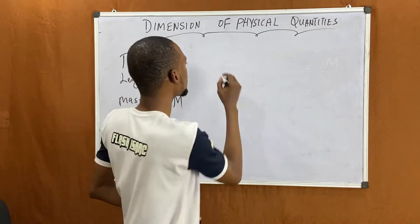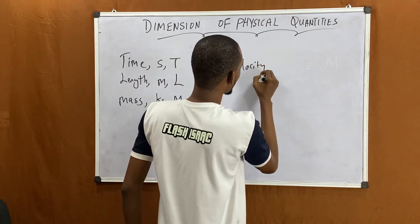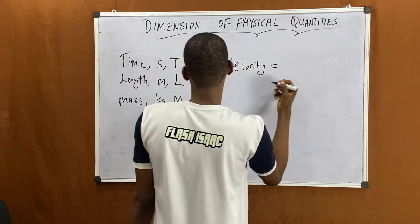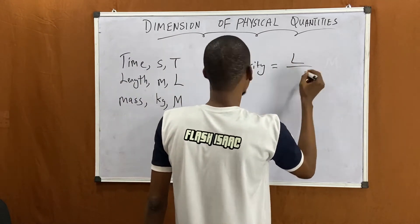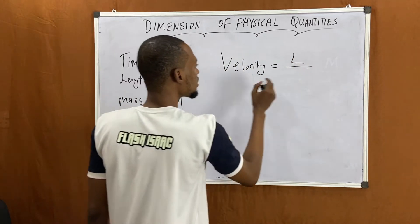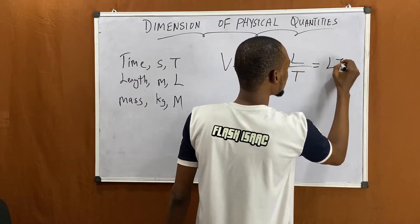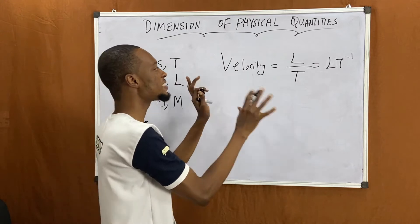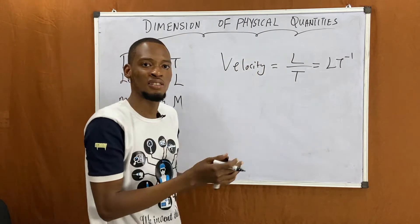Now velocity. Velocity is displacement over time, that is length over time. So it's L over T, which is simply L·T⁻¹. That's the dimension for velocity.